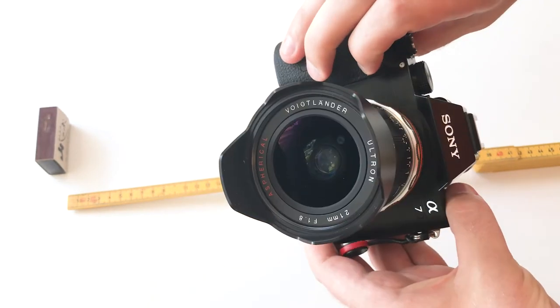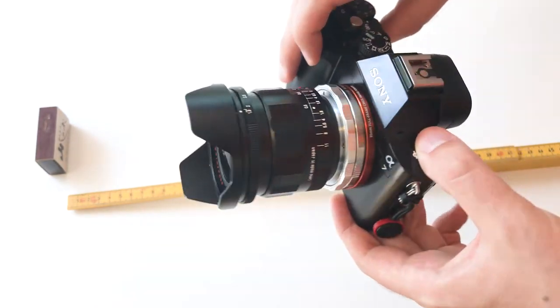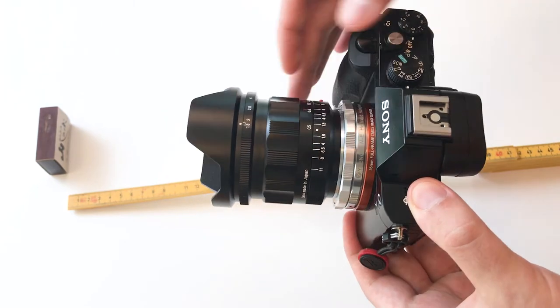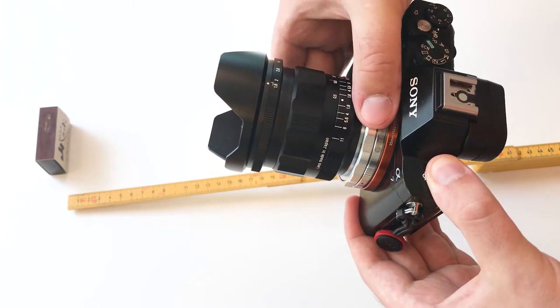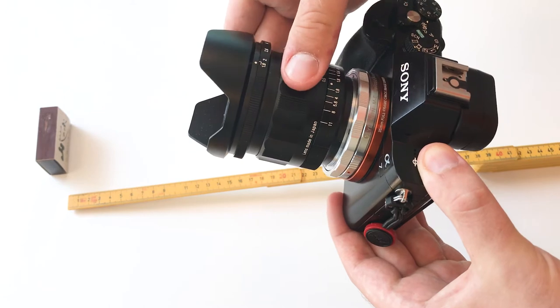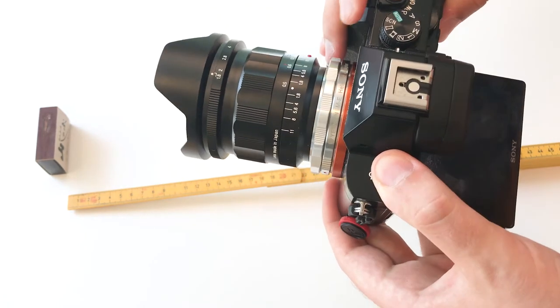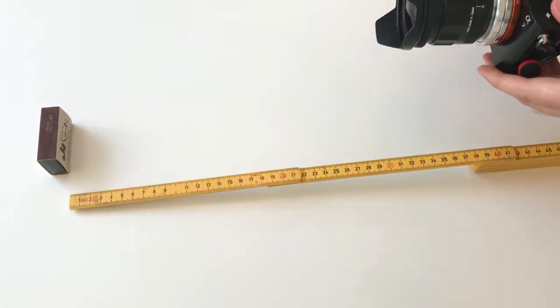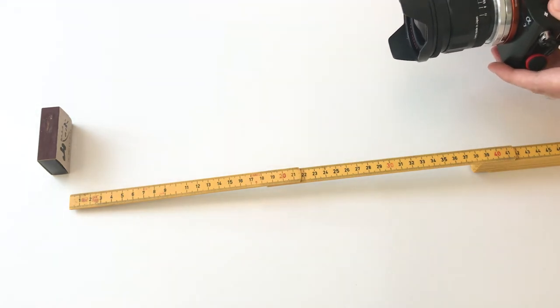I'm going to begin with a Voigtlander 21mm f1.8 Ultron. With a wide angle lens like this, the difference in minimal focusing distance will be very great compared to a narrower angle lens.